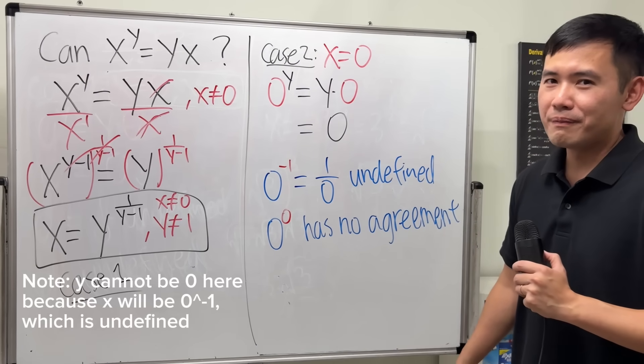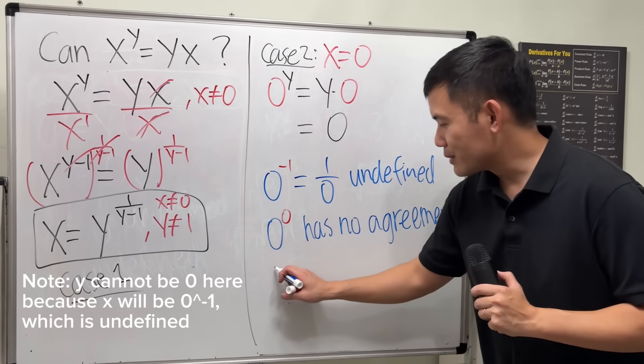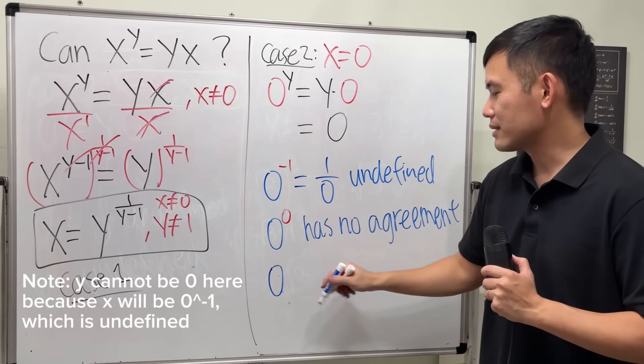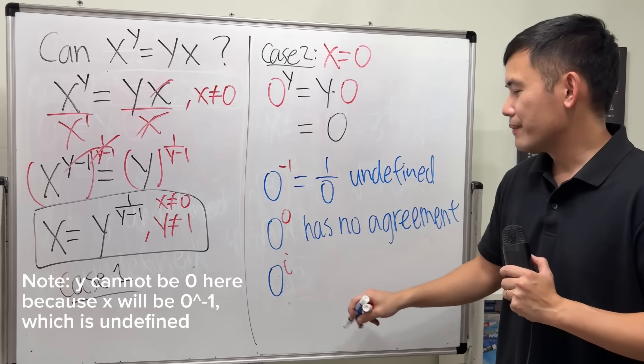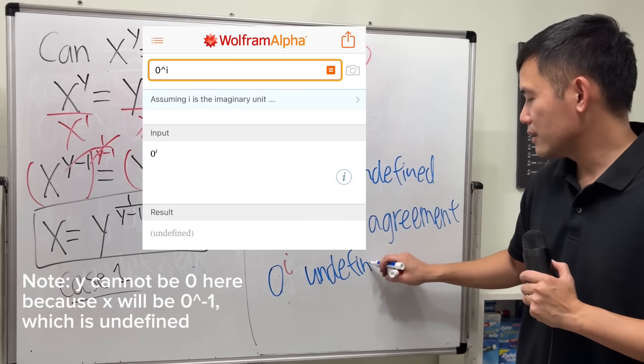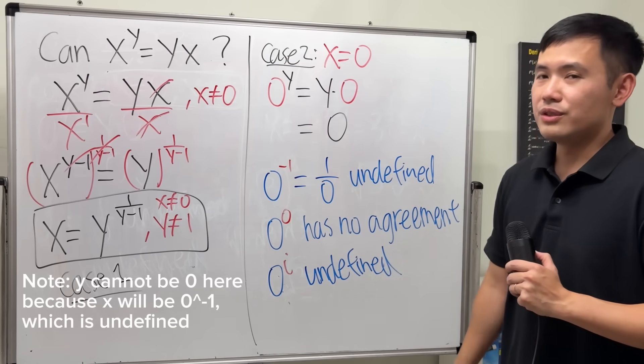In fact, I will tell you, you cannot have imaginary number like the complex i. This right here is also undefined. You can check on my other video for that. But not defined. So, there are a lot of conditions. No negative, no 0, no non-real number.